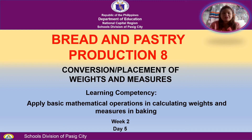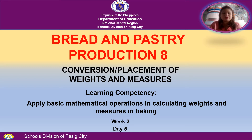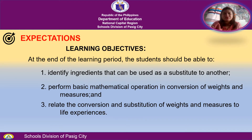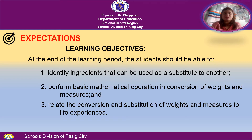Today, the learning competency is to apply basic mathematical operation in calculating weights and measures in baking. We will discuss about conversion or substitution of weights and measures. For today's learning objectives, at the end of the learning period, the student should be able to: first, identify an ingredient that can be used as a substitute to another; second, perform basic mathematical operation in conversion of weights and measures; and third, relate the conversion and substitution of weights and measures to your life experiences.